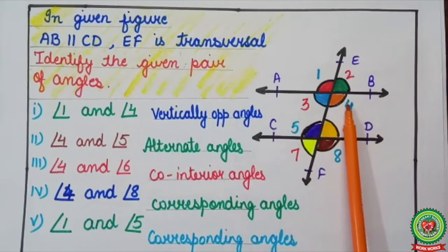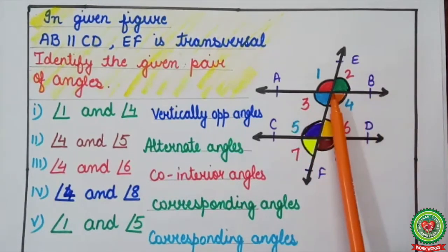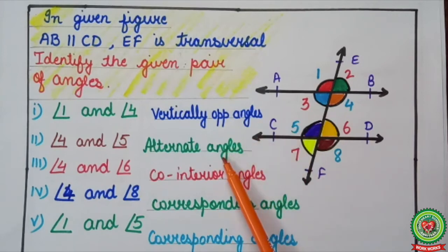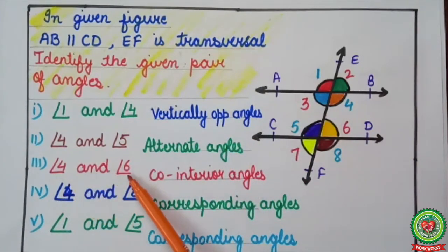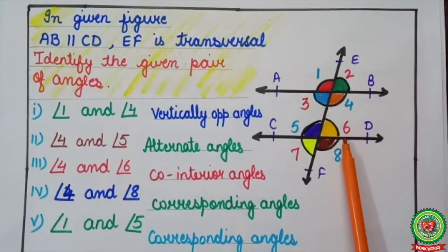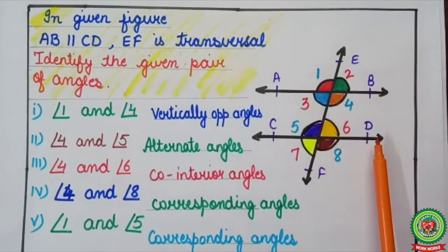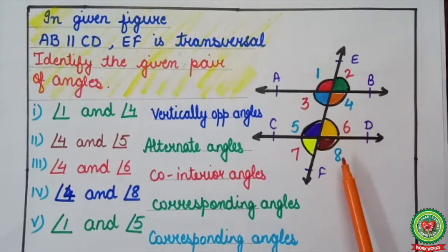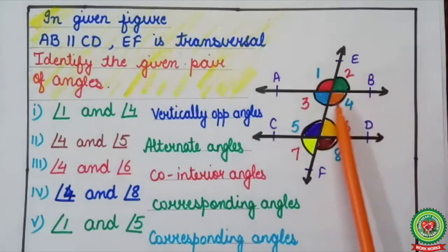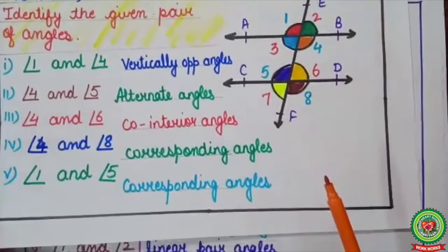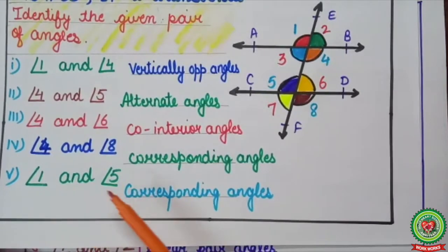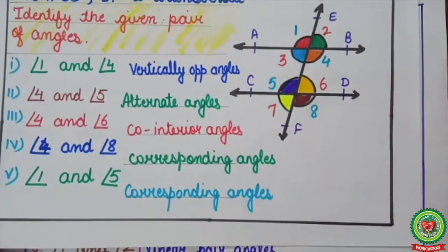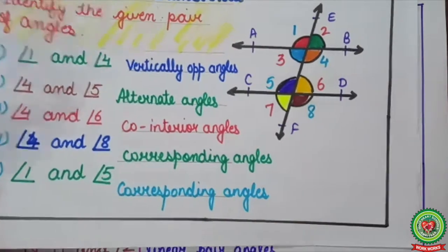Next, angle four and angle five: they are forming a Z shape, so angle four and angle five are alternate angles. Next, angle four and angle six: a big bracket is forming, so they are co-interior angles. Next, angle four and angle eight: they are forming an F shape, so these are corresponding angles. And the last one, angle one and angle five: they are forming a stair-like shape, so these two are also corresponding angles.